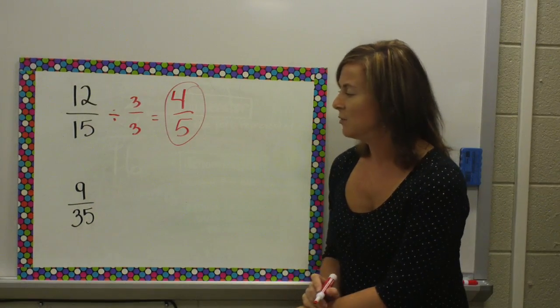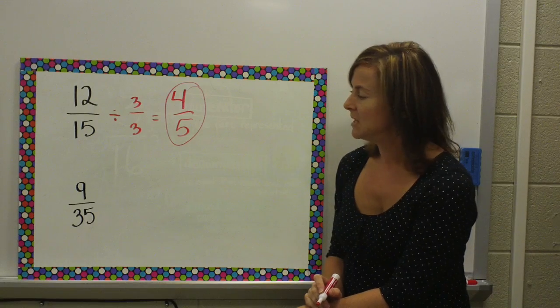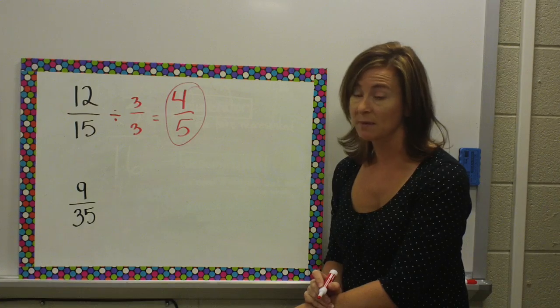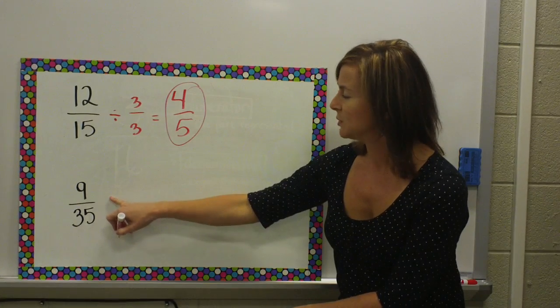Next, I have 9 over 35. So, I'm thinking it might already be in simplest form, but I want to make sure. So, I start with 2. That won't work, because they're both not even.